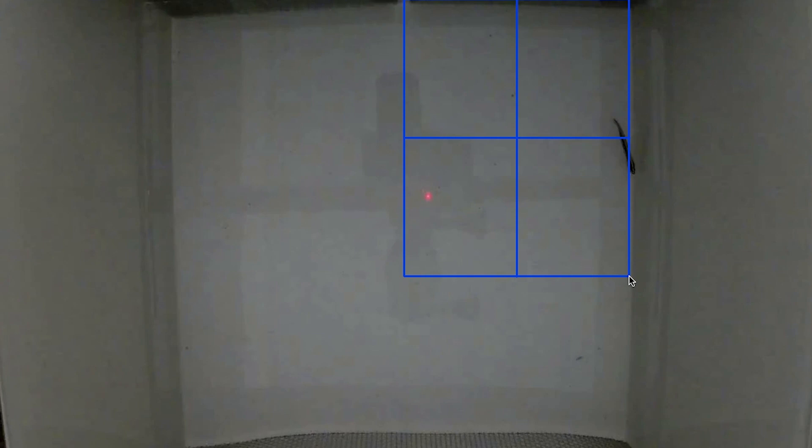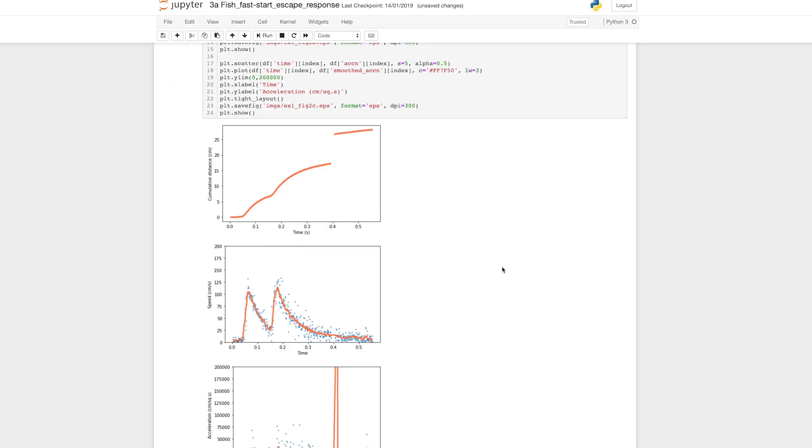For example, we can detect how long an animal spends in a certain area of interest, or what speed the animal is moving, get the speed profile, the acceleration profile of the animals, which is extremely useful depending on the field of study.